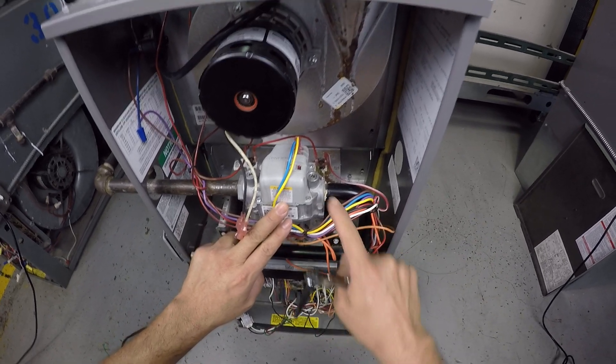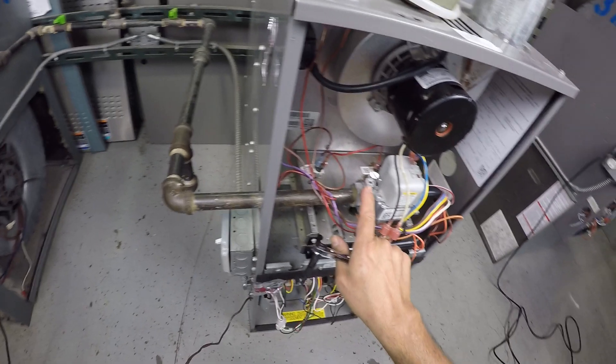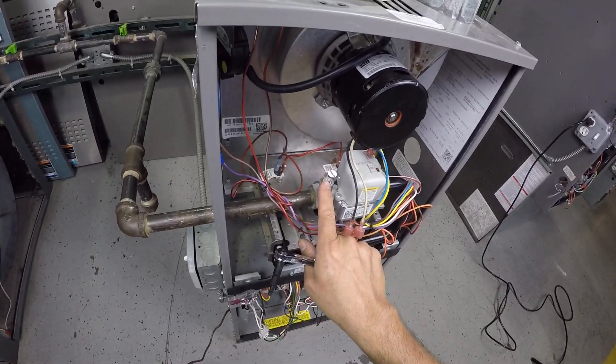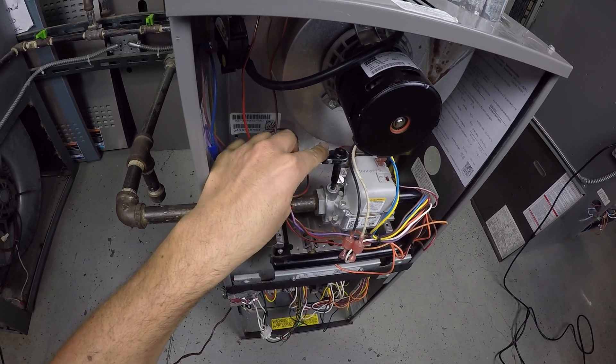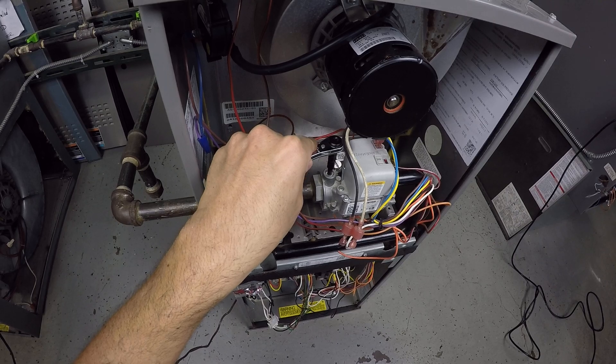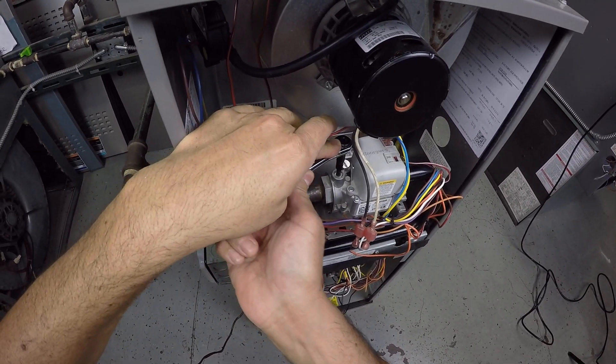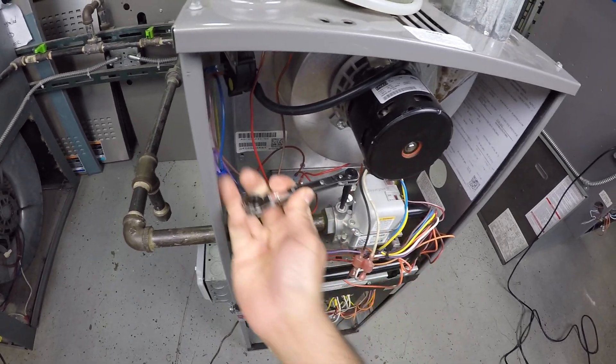By the way, this is called a manifold, and there's the cap to check the pressure coming out. There's the cap to check the pressure coming in. So the first thing we're going to do is use the service wrench.